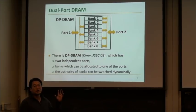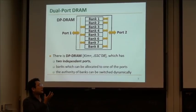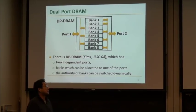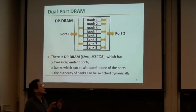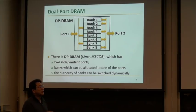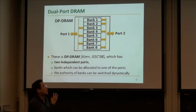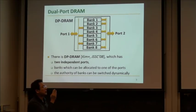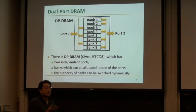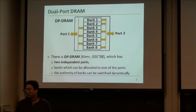Dual-port DRAM has two ports, and inside the DRAM many banks are located. Dual-port memory has two ports, and each port has independent command, address, and data buses. Both ports can access DRAM independently, and each bank can be allocated to one of the ports. For example, bank one is allocated to port two — in that case, port one cannot access bank one, but port two can.